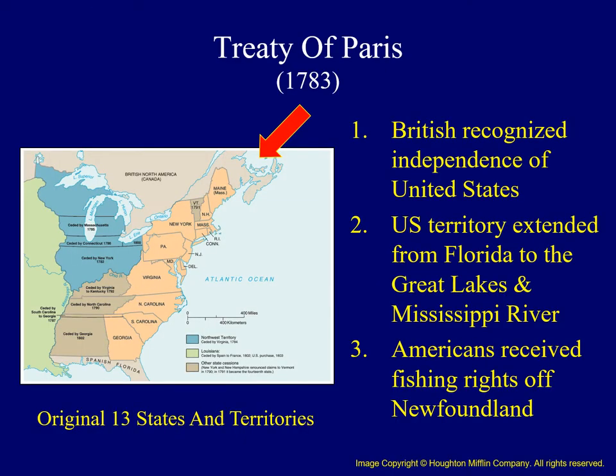There are three primary provisions of the treaty which can be addressed here. First, the British agreed to formally recognize the independence of the United States. Secondly, American territory extended north of Florida to the Mississippi River and Great Lakes. There would be future disputes with Spain over Florida as well as the British occupation of posts in the Great Lakes, but overall these were generous boundaries.